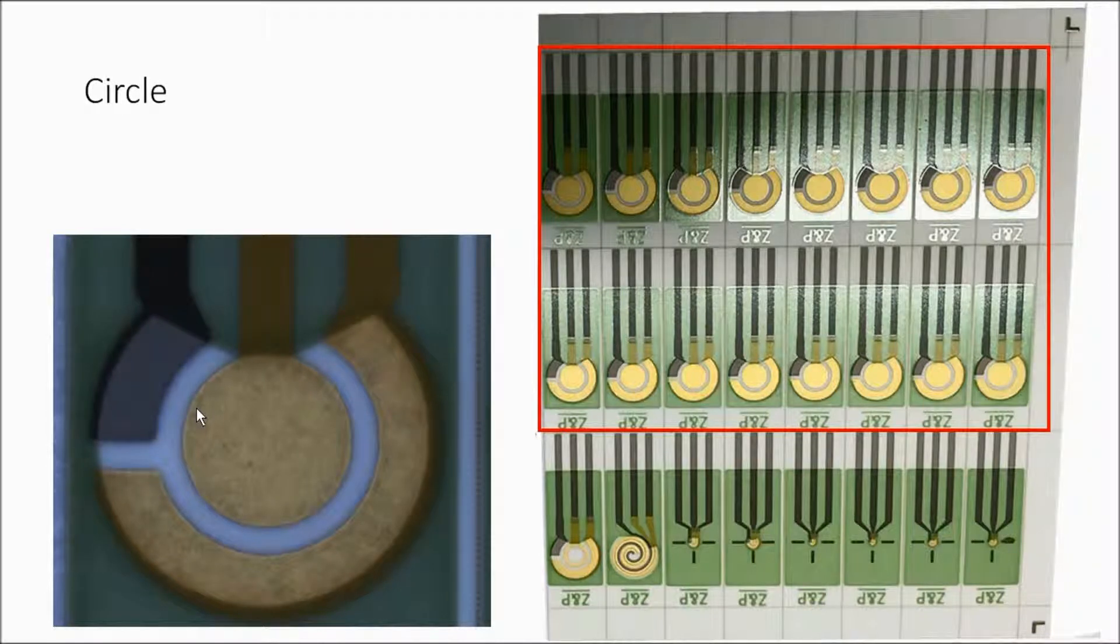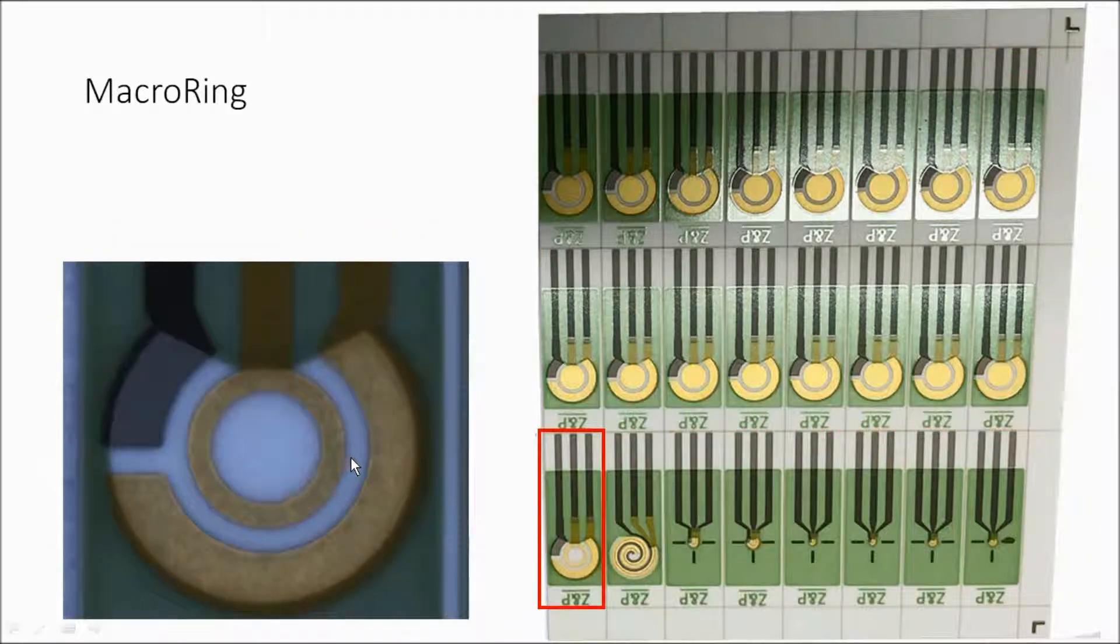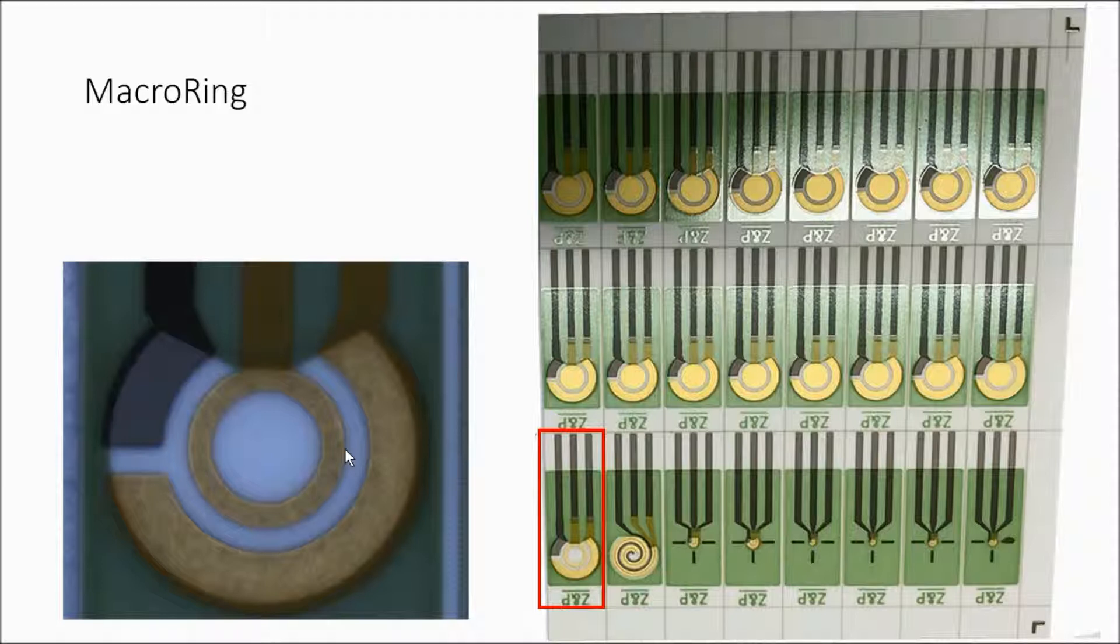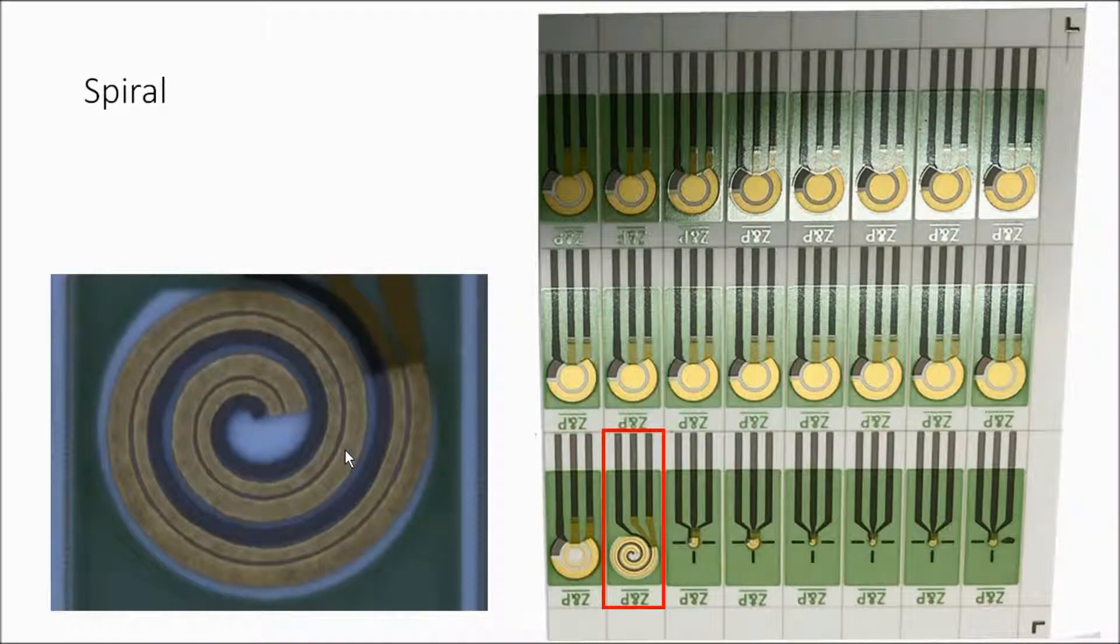electrode configurations. Here we have a reference electrode, a counter electrode, and a working electrode. Here we've modified the working electrode to be a macro ring, and we can talk about the pros and cons of that. Here we